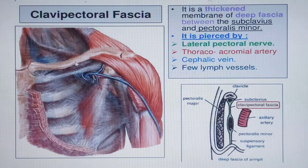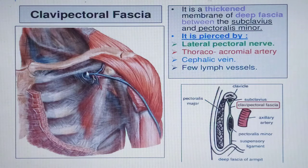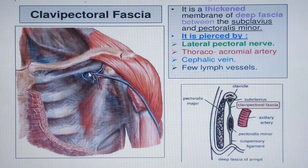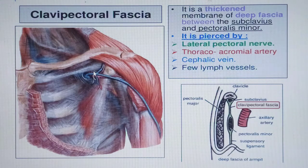The clavipectoral fascia is a thickened fascia between the subclavius muscle and the pectoralis minor muscle. Structures piercing it include: the thoracoacromial trunk, the lateral pectoral nerve, the cephalic vein, and some lymphatic vessels — remembered as 'LCT' plus cephalic vein.